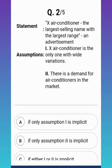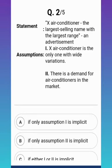The correct answer is assumption two. Assumption one is not correct because the statement says X has the largest range, but that does not mean it is the only one with wide variations — other air conditioner companies also have variations. Assumption two is correct because if there is an advertisement, it is natural that there is a demand for the product in the market.